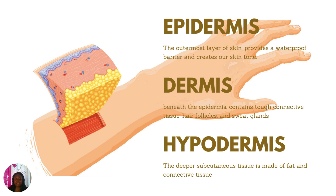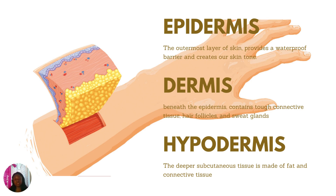We have three major layers of the skin: the epidermis, the dermis, and the hypodermis. The epidermis is the outermost layer of the skin — it provides a waterproof barrier and creates our skin tone. It's the layer you can see that shows whether you're dark, caramel, white, or black. Then we have the dermis, which sits just beneath the epidermis and contains tough connective tissues, hair follicles, and sweat glands.